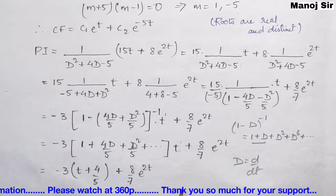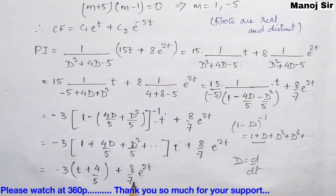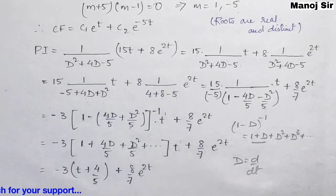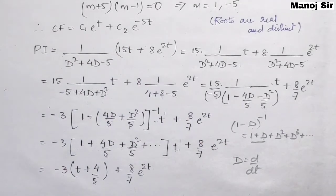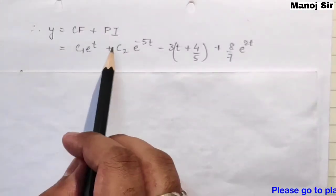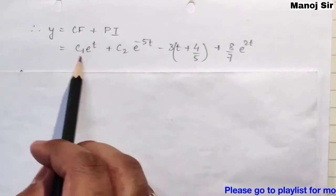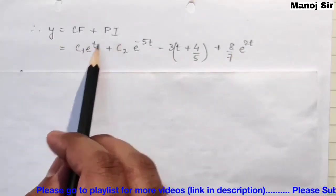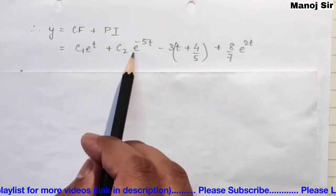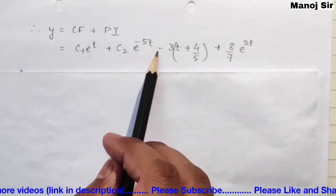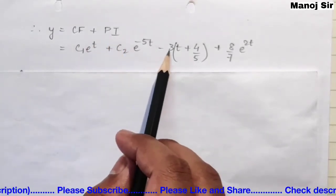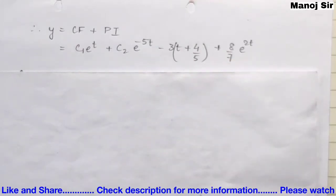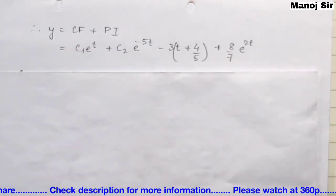The complete solution for y is y = CF + PI, that is: y = c1·e^t + c2·e^(−5t) − 3t + 4/5 + (8/7)e^(2t).